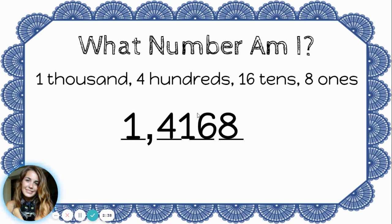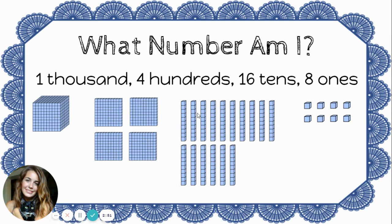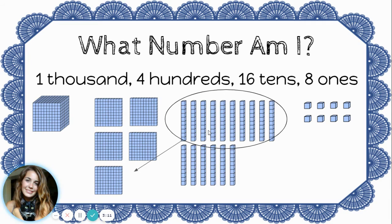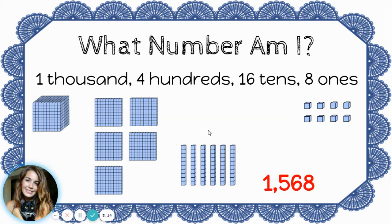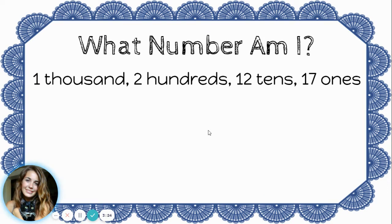Once again, I have a two-digit number, sixteen, crammed into the tens place. I can't do that. The tens place can only hold one digit. Let's take a look at the base ten blocks. I know my problem is in the tens. Let's think about bundling ten tens together to make another hundred. These ten tens are going to make another hundred. Now I have one thousand, five hundreds, six tens, and eight ones, which is the number one thousand five hundred sixty-eight.